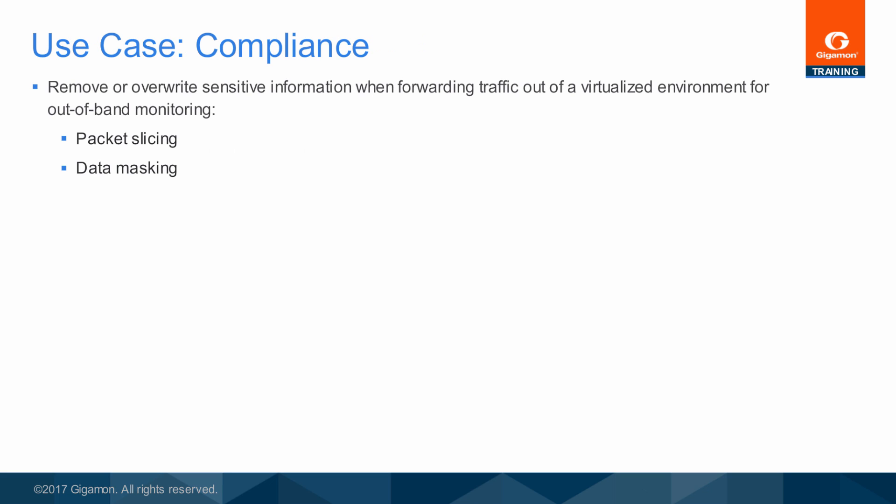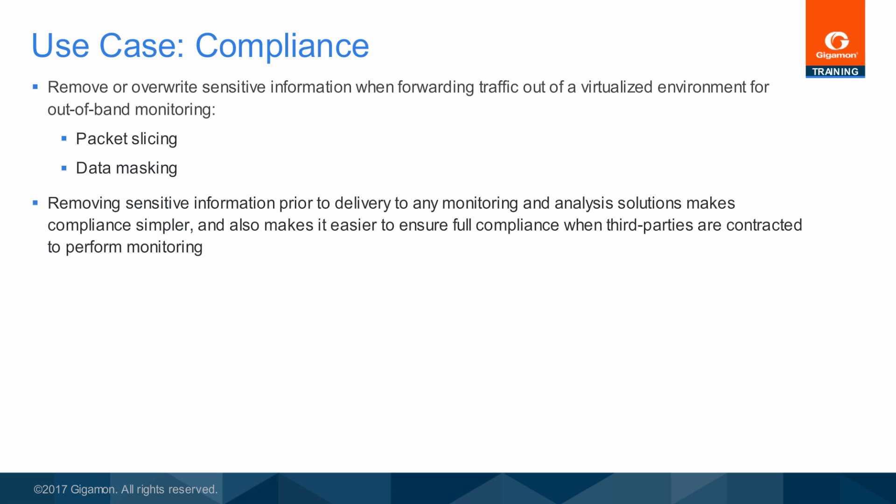To better comply with regulations and confidentiality, sensitive traffic may be configured to slice or mask packet data before it is delivered to monitoring and analysis solutions. When the visibility fabric is able to protect sensitive information before any solution receives it, then individuals and organizations lacking a need-to-know will only receive traffic which has been scrubbed of any sensitive data. This sort of automated behavior increases confidence that regulatory compliance and confidentiality demands can be met, and is particularly important when third-party organizations are contracted to perform some or all monitoring and analysis.